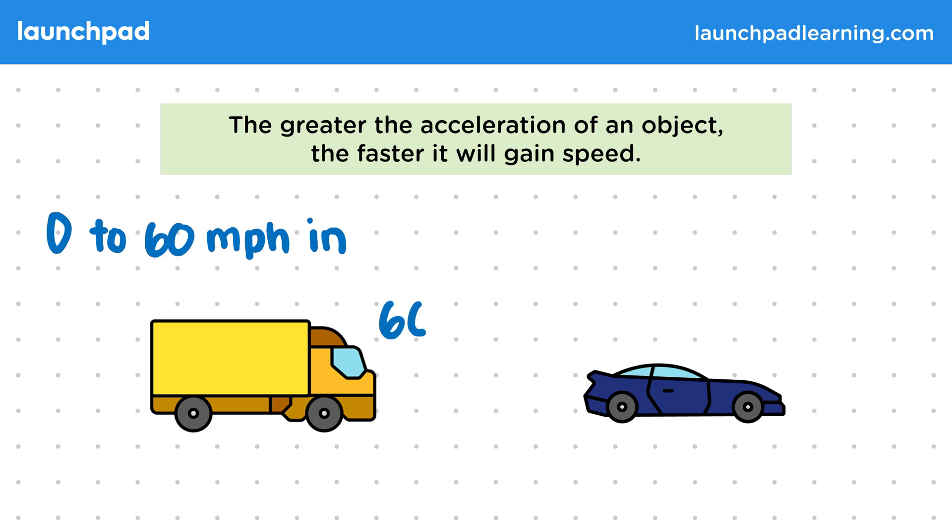The truck takes 60 seconds to accelerate to this speed, while the sports car takes only 5 seconds. This tells us that the rate that the car's speed was increasing was greater than the truck's. In other words, the car has a greater acceleration.